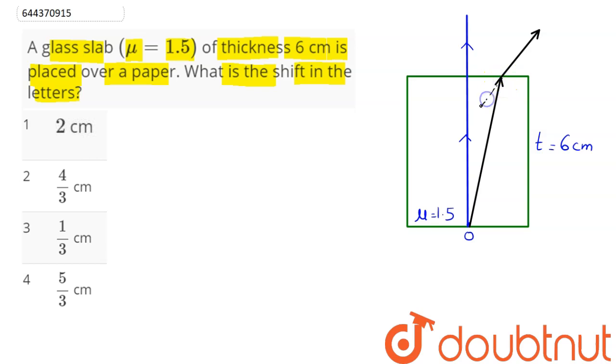So we can say when this ray is produced backwards, this will intersect here. So this is our image position. Now this is the shift which is being asked, that is distance from O to I is our shift. And this point is point A...